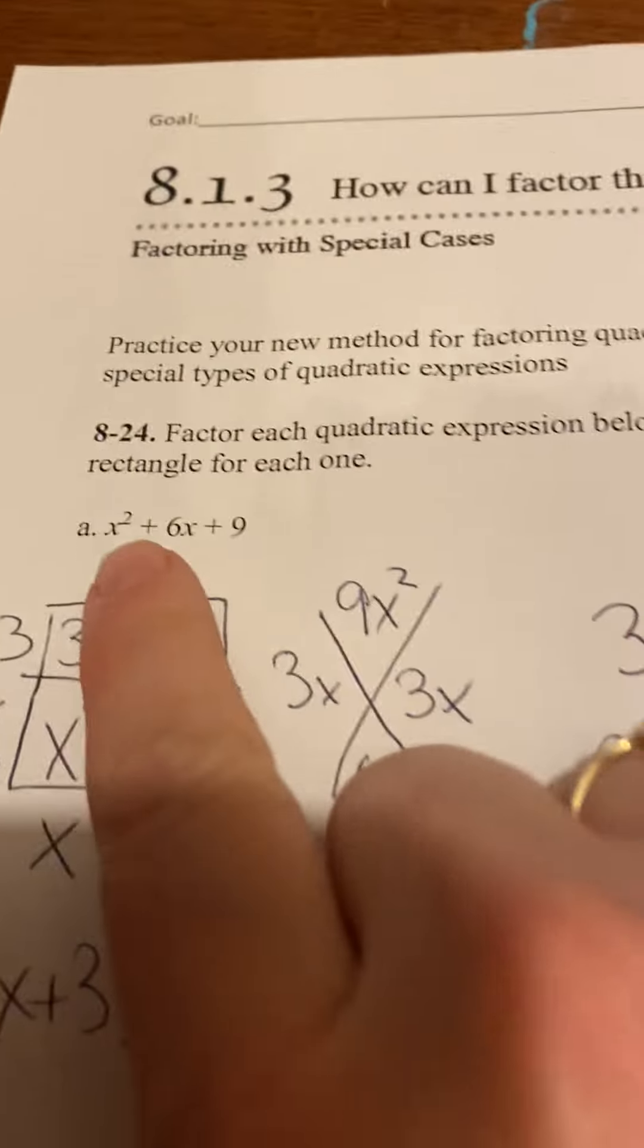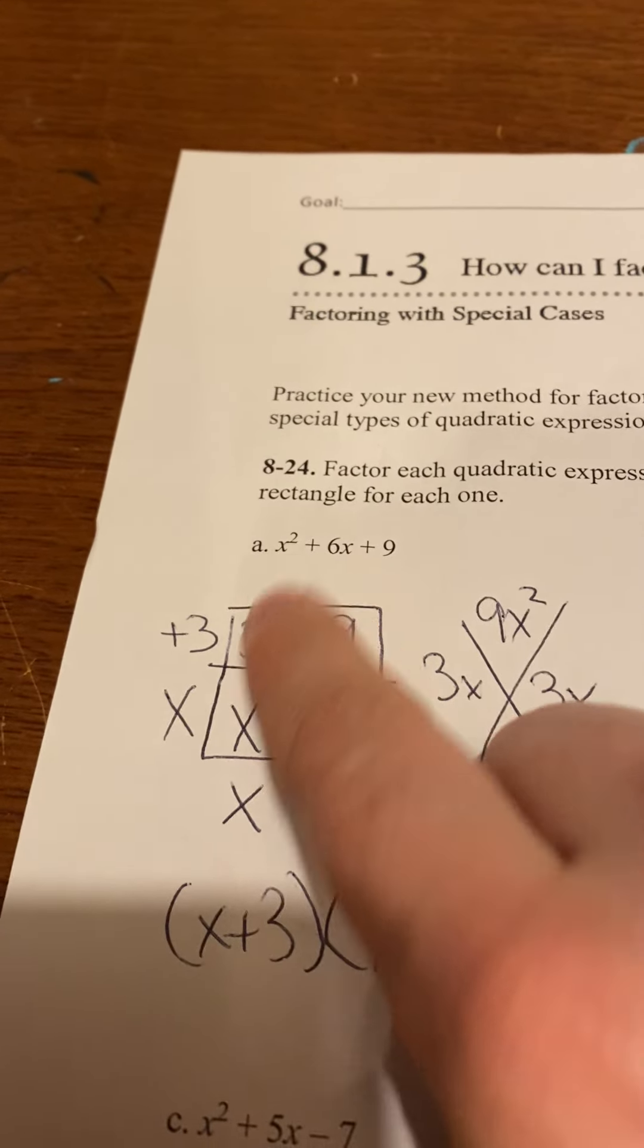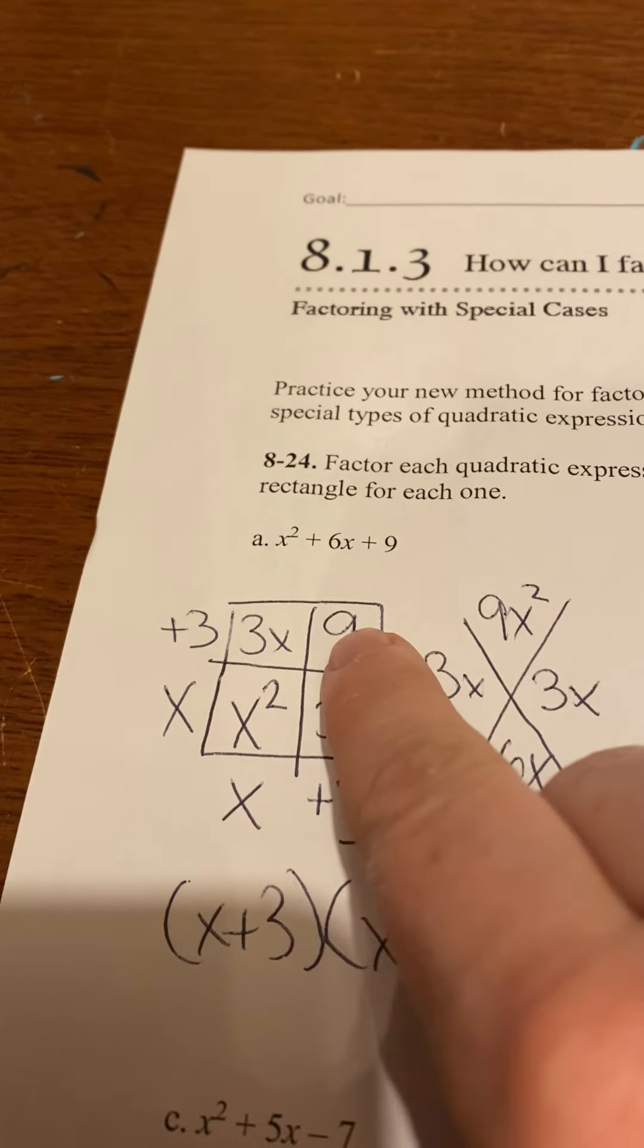So the problem is x squared plus 6x plus 9. So I drew my generic rectangle. Remember you know that the x squared is going to go here and the 9 will go there.